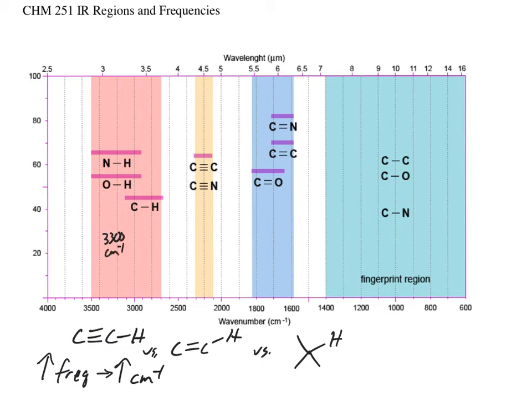So these SP, SP CHs, a lot of times are right around 3,300. You'll see them. SP2 is right around 3,000. And then SP3 is always less than 3,000. So it's usually around 2900, less than that, and down. So you'll see that. If you have a stretch at around 2900 below 3,000, that tells you of an SP3 CH. If you have a really strong peak here, that tells you of a SP CH. But increase in frequency gives an increase in the wave number.